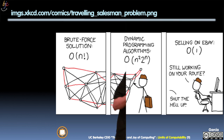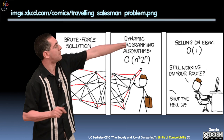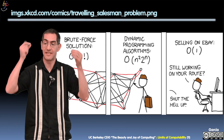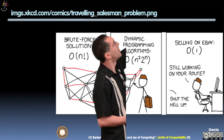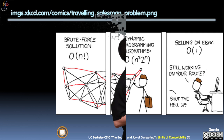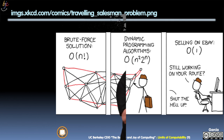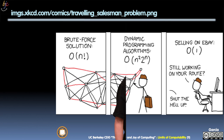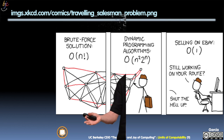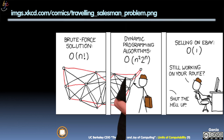The traveling salesman problem requires visiting every single city in the most efficient way. The brute force solution is n-factorial — intractable. Dynamic programming gets it to order n-squared times two-to-the-n, still better than n-factorial but still intractable. Another XKCD punchline: 'Selling on eBay — O(1), constant time. Click, sold. No traveling at all.' The guy turns and says 'Still working on your route?' — 'Be quiet.'